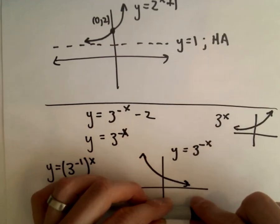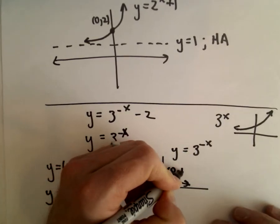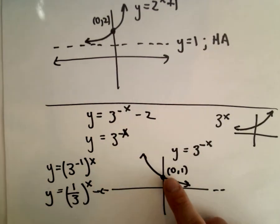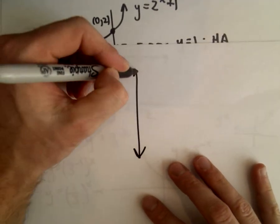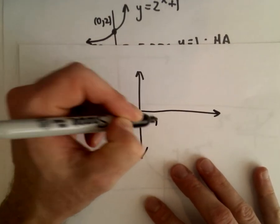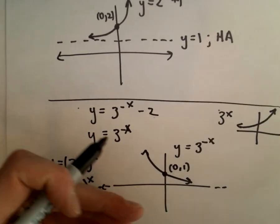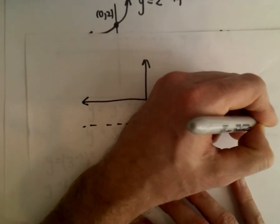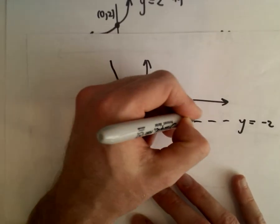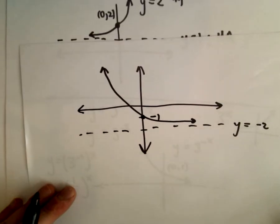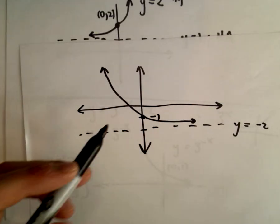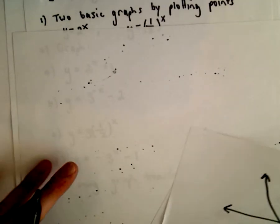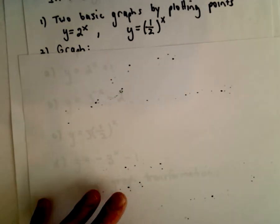For Y equals 3 to the negative X minus 2, subtracting 2 just moves the graph down 2 units. Instead of going through the point (0, 1), it'll go through (0, negative 1). The horizontal asymptote also moves down 2 units — instead of being at Y equals 0, it'll be at Y equals negative 2. If you want to make a better graph, you can always plot more points — on a test or quiz, labeling a couple extra points shows you know what you're doing.